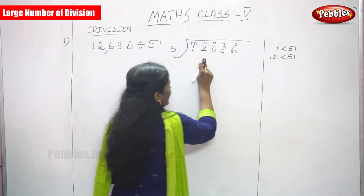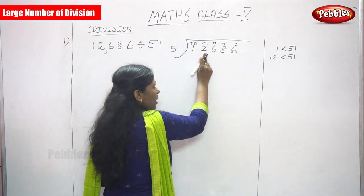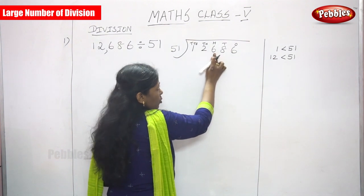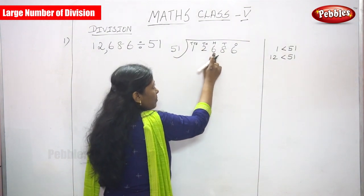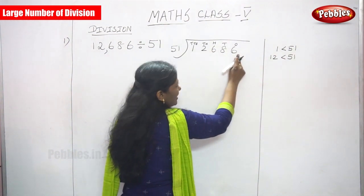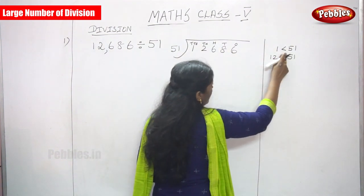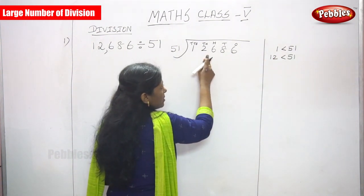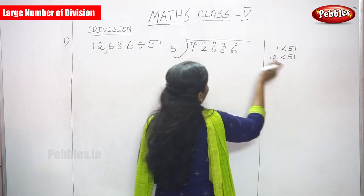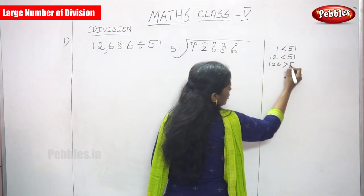The next digit brings us to 100's place. Just look at the numbers and compare with the divisor. First, 1 is less than 51 — you can't divide. The next digit gives 12, still less than 51. The next gives 126, which is greater than 51, so now we can divide.